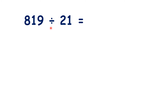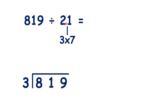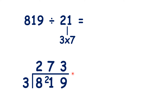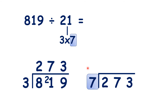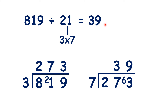So now pause the video and see if you can answer this question using factor pairs. 3 times 7 is 21, so I'm going to divide by 3 and then divide the answer by 7. But you could do it the other way round — divide by 7 first and then divide by 3. Dividing by 3 first, we get 273. And then dividing by 7, the other factor, gives us 39, our answer.